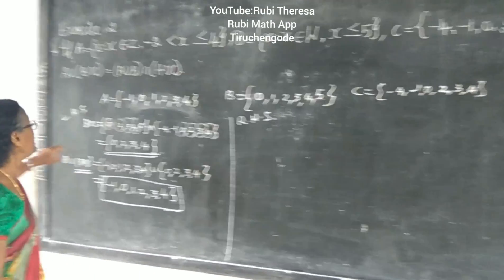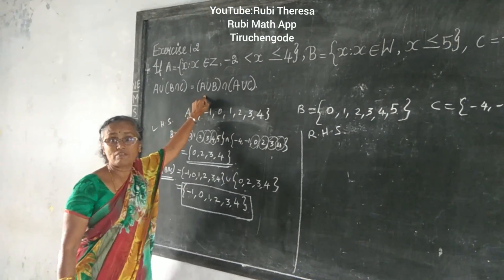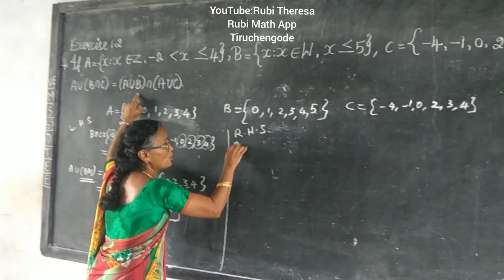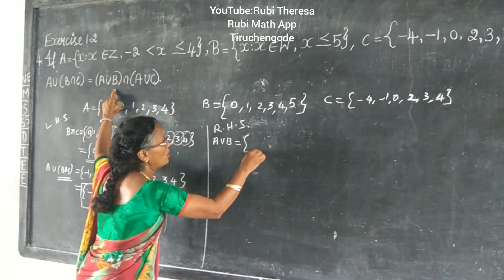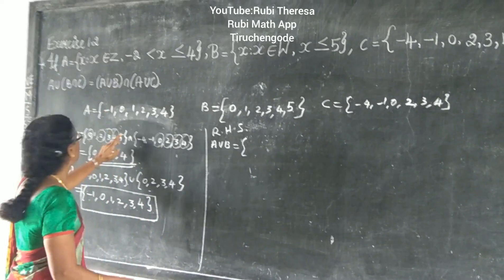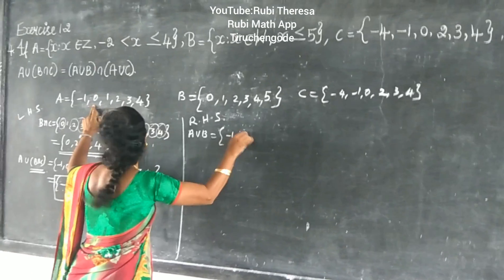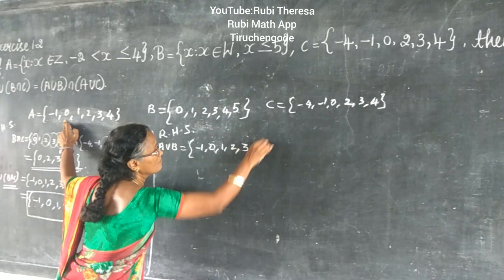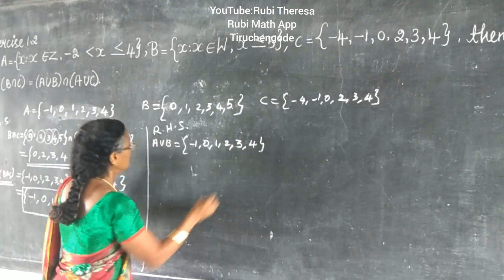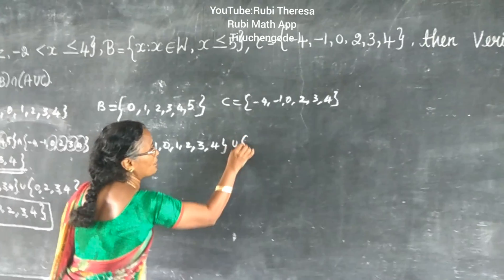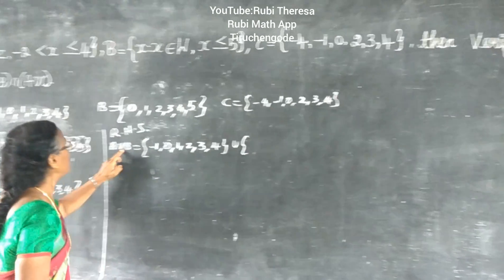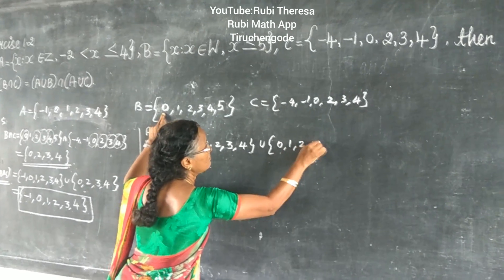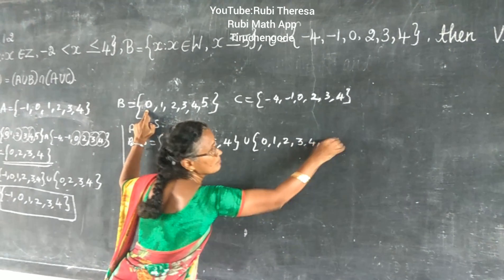What is the right hand side? First, what is given in the bracket? A union B. What is A? Minus 1, 0, 1, 2, 3, 4. What is the set operation? Union. What is B? B is: 0, 1, 2, 3, 4, 5.